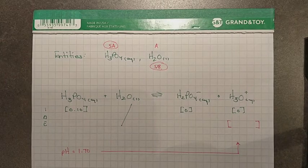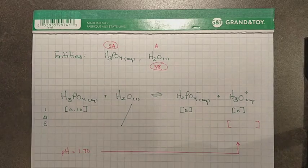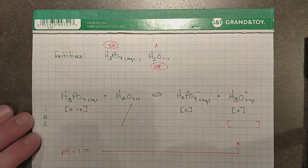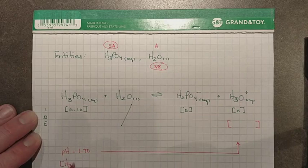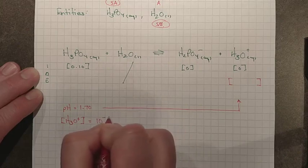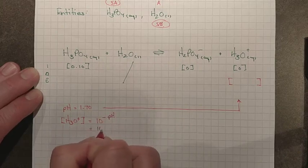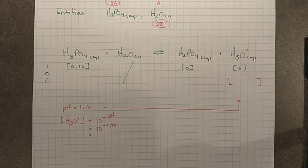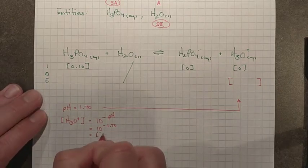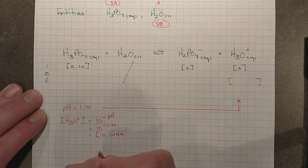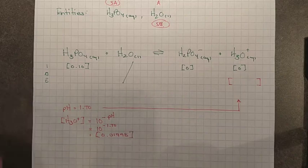The pH value gives us an equilibrium concentration for hydronium — we just need to convert it. Using the relationship from Chapter 16.1: [H₃O⁺] = 10^(−pH) = 10^(−1.70). Running that through the calculator gives a concentration of 0.01995 mol/L.